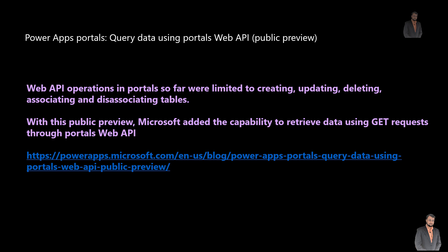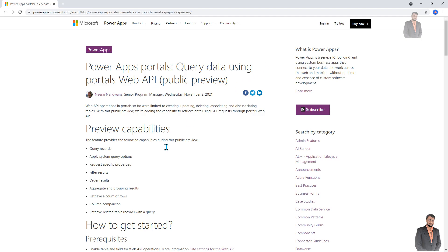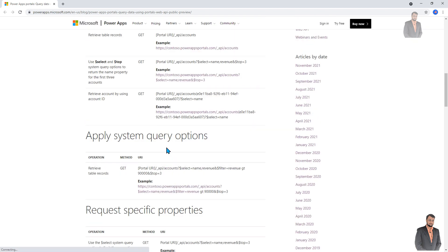The eleventh important announcement is about Power Apps Portal. Now we can query data using Power Apps Portal via Web API. Web API operations in the past were limited to creating, updating, deleting, and associating and disassociating tables. With this public preview, Microsoft has announced many cool features with the new portal Web API support. There is a full blog about preview capabilities available, and the link is in the description box.